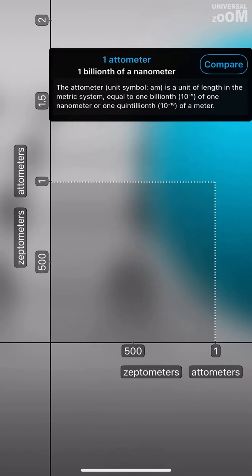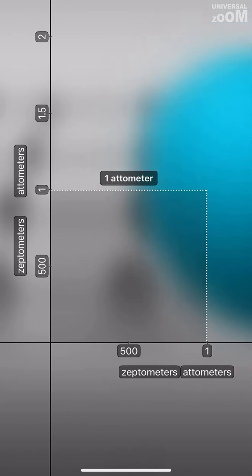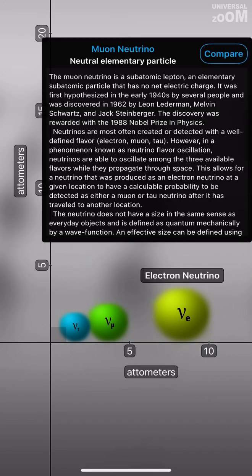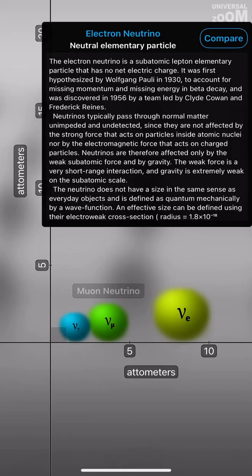1 Attometer, 1 billionth of a nanometer. Tau Neutrino, Muon Neutrino, Electron Neutrino.